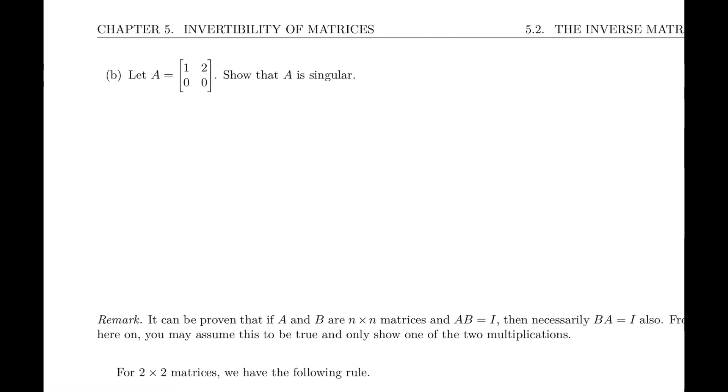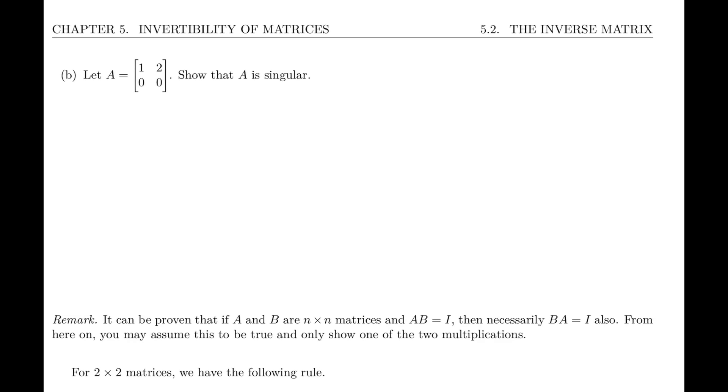One more example. And here in this case, we're asked to show that this matrix is singular. So if you remember in our definition, singular simply means not invertible. And how do we check that? Well, let's look at the question. It says show that A is singular. Show is another way of saying prove. So prove means that we can't just give an example, but we need to show that there is no matrix that satisfies the definition.